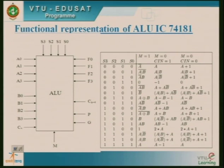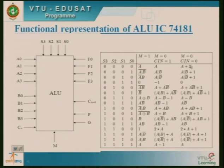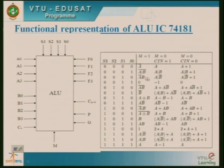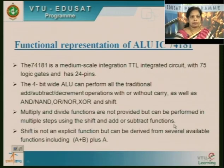The operations performed by ALU include logical operations like AND, OR, NOT, XOR, and NAND. It can do bit-shifting operations — shifting bit positions right or left — which is done for multiplication. It also performs arithmetic operations like addition, subtraction, and division. This ALU does logical operations, shifting operations, and arithmetic operations. Additions can substitute for multiplication — repeated addition is done for multiplication operations.